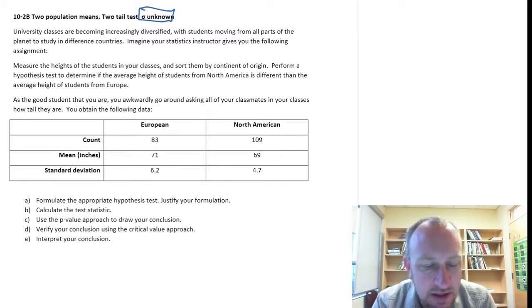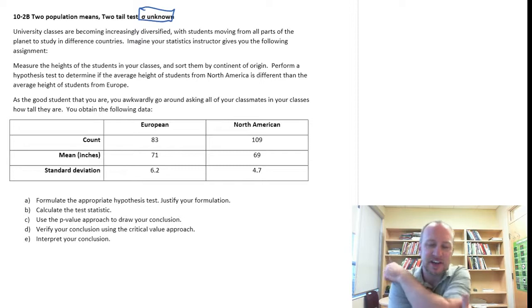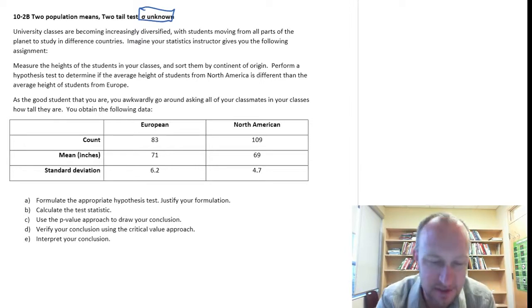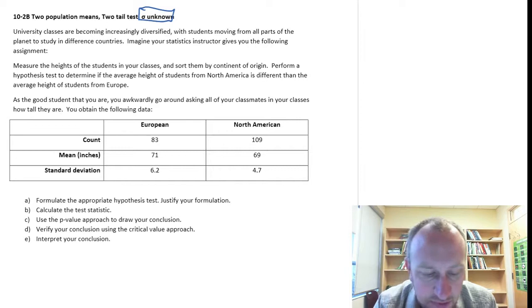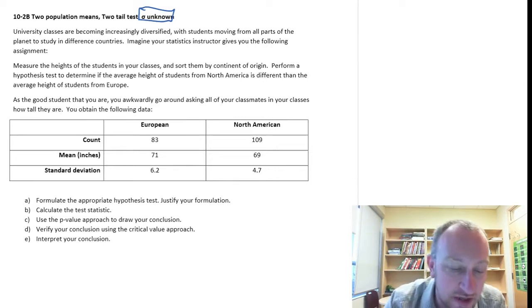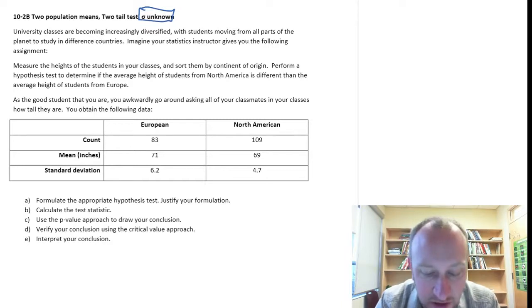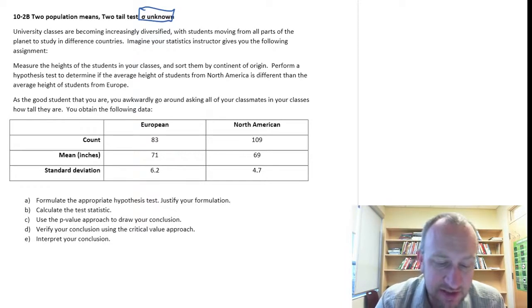We're looking at diversification among students. University classes are becoming increasingly diversified with students moving from all parts of the planet to study in different countries. The assignment is to measure the heights of students in your class, sort them by continent of origin, and perform a test to determine if the average height of students in North America is different from the average height of students in Europe. As a good student, you awkwardly go around asking your classmates how tall they are, and here's the data that we gather.